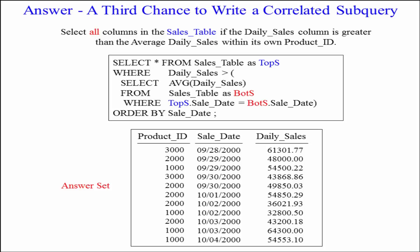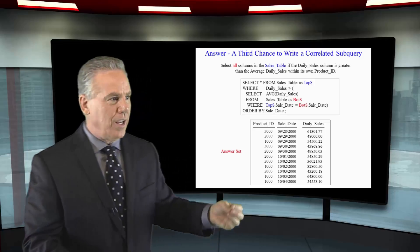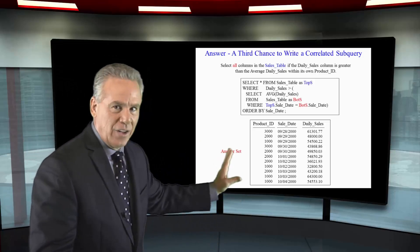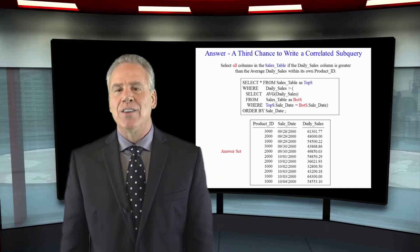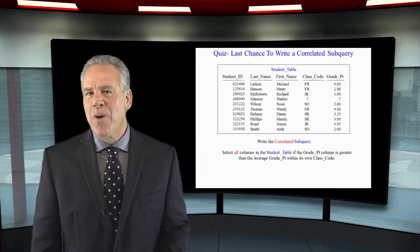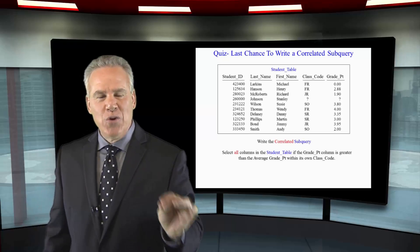Then in the where clause, since we wanted to know which rows would come back that had a daily sales greater than the average daily sales within their own sale date, the where clause is going to be WHERE top s dot sale date equals bottom s dot sale date. Nice work. You get one more shot at this. Come through for me. I know you can do this. Just take your time.